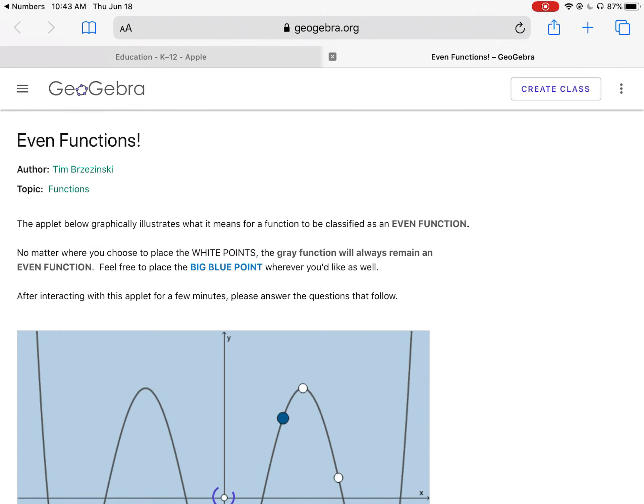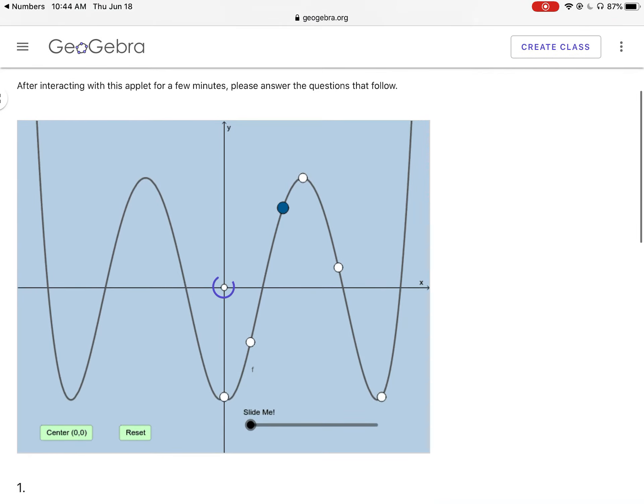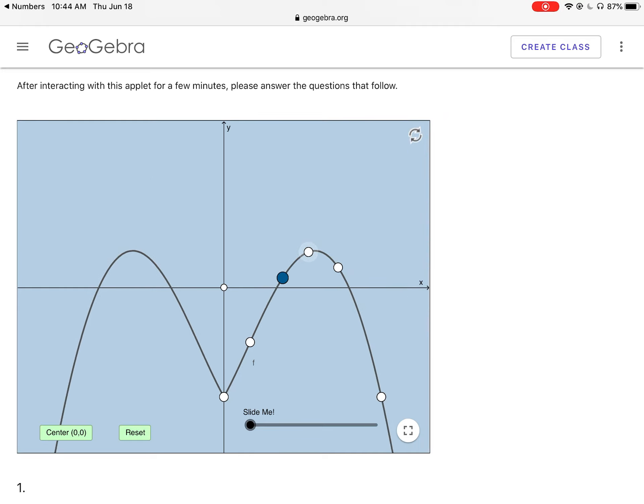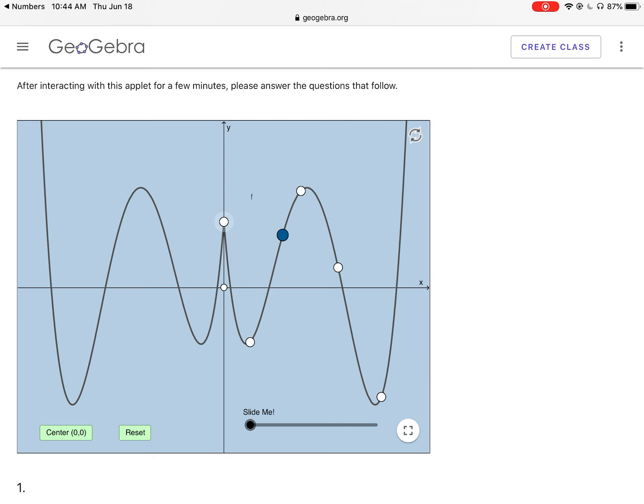And it's going to take us to this applet. And what we have in this applet is we have a function f(x) that is an even function. And we can manipulate some of the points on this function to change the look of the graph. But no matter how we move these points, it's always going to remain an even function. So if you drag any one of these white points, it's going to adjust the graph so that the function remains even.